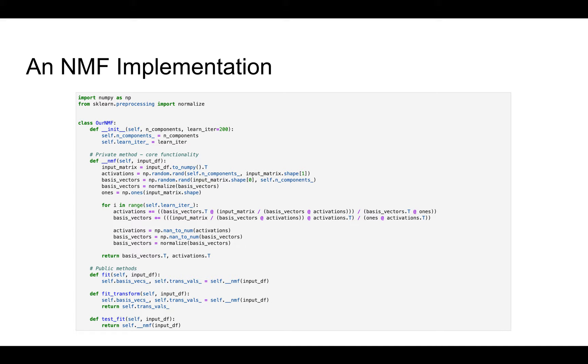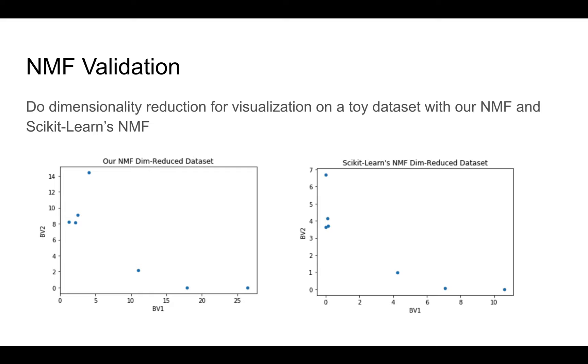And just a quick validation of NMF, what we can do is do dimensionality reduction for visualization by reducing a toy data set that we can just make with pandas to reduce it down to two dimensions. And we can do this with our NMF and then scikit-learn's NMF library. And as you can see, here's a run here, our transformed values in this lower dimension look very similar.